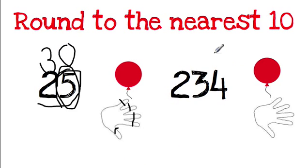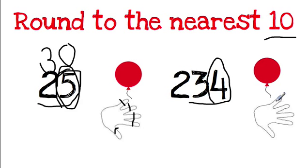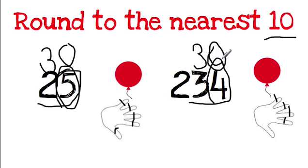Even though I have hundreds, if I'm rounding to the nearest 10, it's very important that I underline the 10s spot and circle the 1s next door. Then I go to my balloon. If I count 1, 2, 3, 4 — my balloon doesn't go up; I'm still holding onto it with my thumb. So nothing happens — it lets it rest, meaning this 3 stays the same, this becomes a 0, and anything on the right becomes a 0. So 234 rounded to the nearest 10 would be 230.